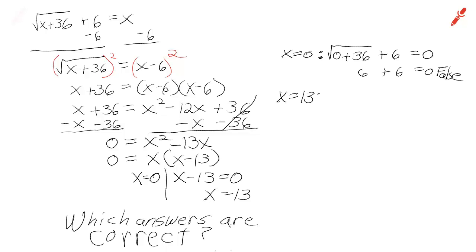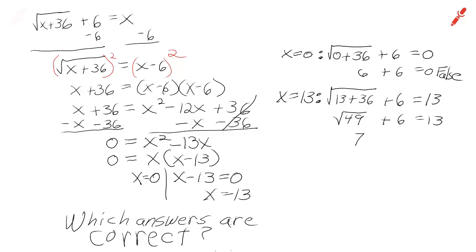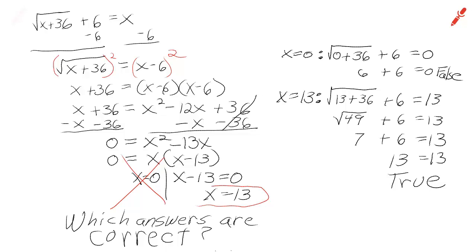Let's try x equals 13. Square root of 13 plus 36 plus 6 equals 13. Is that going to work out? Square root of 49 plus 6 equals 13. 7 plus 6 — does that equal 13? Yes, it does. 13 equals 13. So x equals 13 is the only solution to this radical equation. x equals 0 doesn't work — it's what we call an extraneous solution.